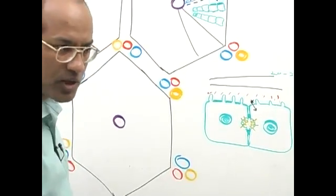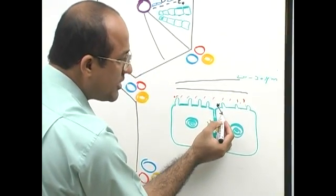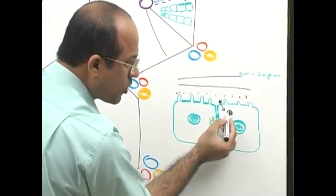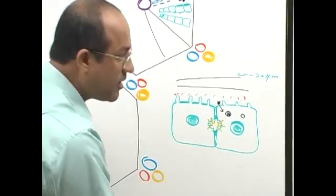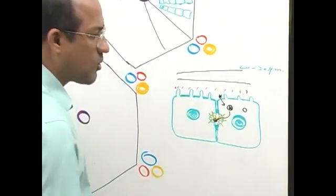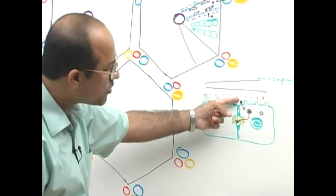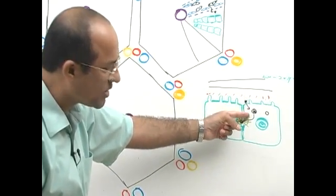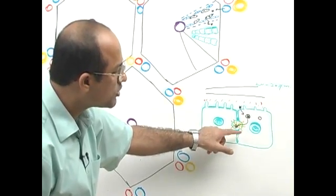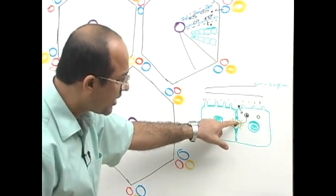Once inside, bilirubin is conjugated with glucuronic acid by the hepatocyte machinery. Then conjugated bilirubin is actively secreted into the bile canaliculus. So the hepatocyte membrane facing the space of Disse has the transporter to bring bilirubin into the cell, and once bilirubin is conjugated with glucuronic acid, it cannot easily go back. The transporter proteins that transfer conjugated bilirubin from the hepatocyte to the bile canaliculus are only present on that side of the membrane.